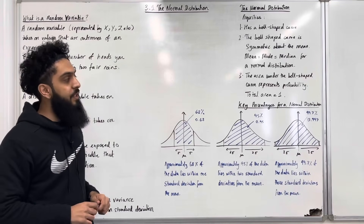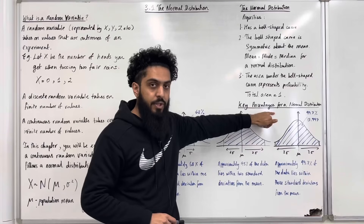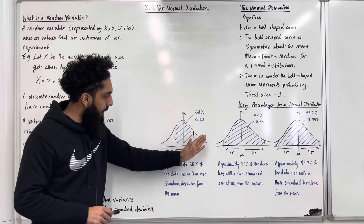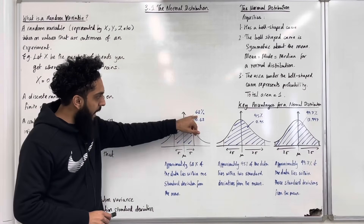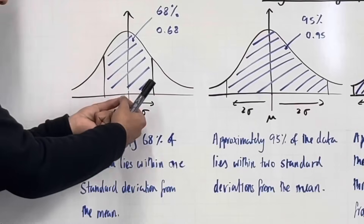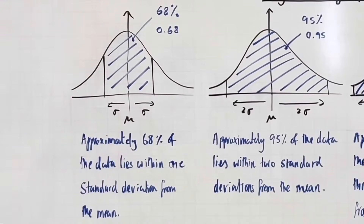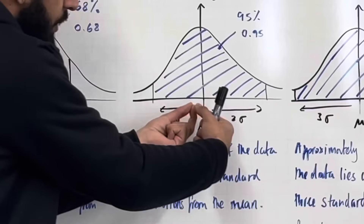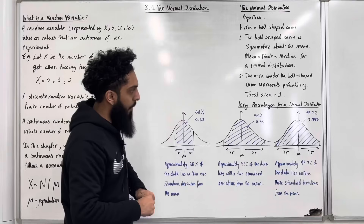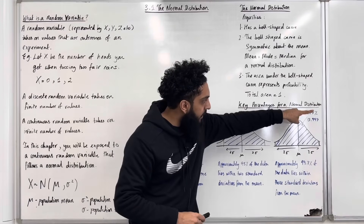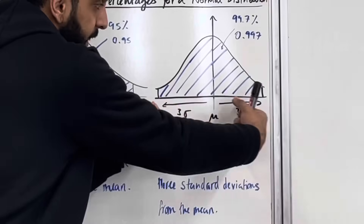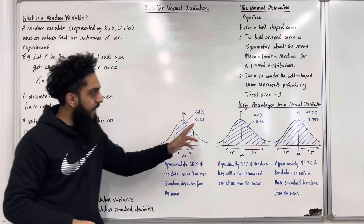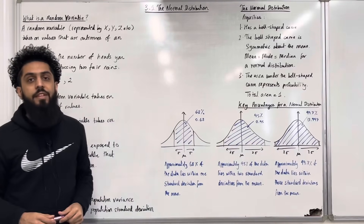There are some key percentages you need to know for a normal distribution. Approximately 68% of the data lies within one standard deviation from the mean. Approximately 95% of the data lies within two standard deviations from the mean. And approximately 99.7% of the data lies within three standard deviations from the mean. Make sure you take a note of these key percentages — you need to know this for the exam.